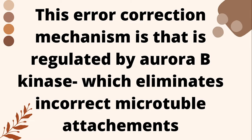Because if the SAC checkpoint does not clearly function out, it causes aneuploidy. So let's start the SAC checkpoint, how does it work and function. So this is an error correction mechanism that is regulated by aurora B kinase enzyme, which eliminates the incorrect microtubule attachments. This regulatory mechanism involves aurora B kinase.